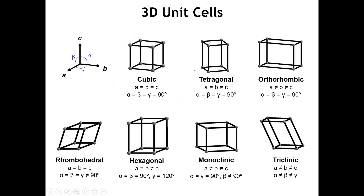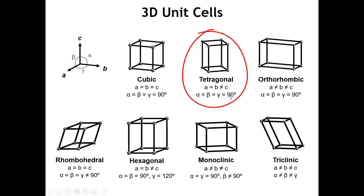If we were to make that third perpendicular vector longer or shorter than the lattice vectors that define the square base, then we would get the crystal system called tetragonal, where two faces of the unit cell are squares and the other four are rectangles. Here the third lattice vector, by definition C, is no longer equal to the other two lattice vectors, but the three lattice vectors are still at right angles with respect to each other.